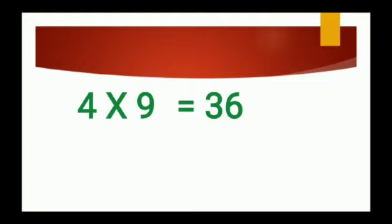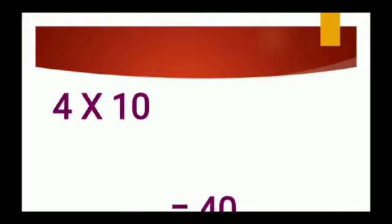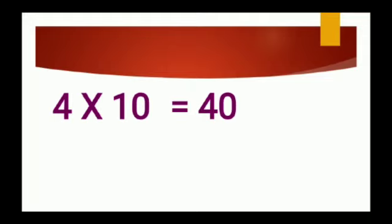4 nines are 36. Speak with me — 4 nines are 36. When we multiply 4 into 9, we get 36. What we get when we multiply 4 into 9? Yes, we get 36. Speak with me — 4 nines are 36. Four tens are 40. When we multiply 4 into 10, we get 40. What we get? Yes, we get 40.